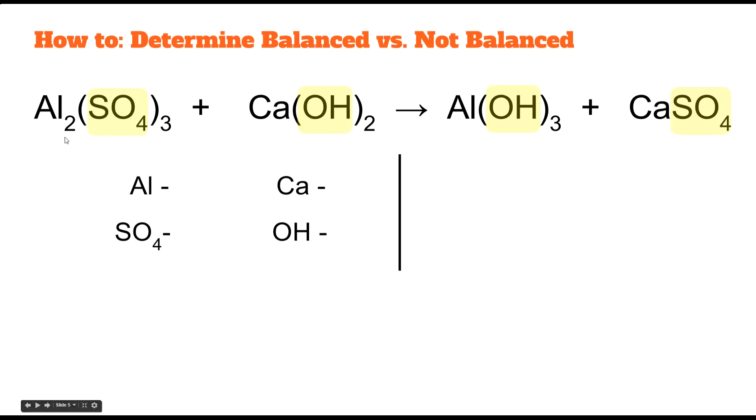All right, let's count our atoms. Aluminum, we have 2. Sulfates, we have 3. Calcium, we have 1. Hydroxide, we have 2. All right, copy our list down.